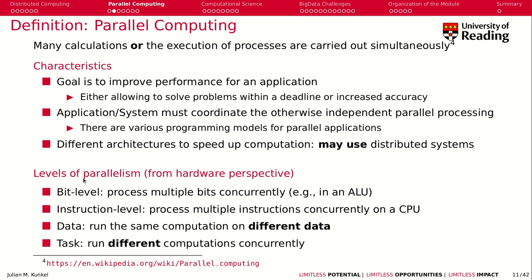There are different levels of parallelism to think about from the hardware side. For example, at bit level, that means you want to process multiple bits concurrently, for example in an ALU. At instruction level, that means processing multiple instructions concurrently, for instance in your CPU. Data parallelism means to run the same computation on different data, and task parallelism means to run different computations at the same time.